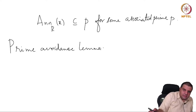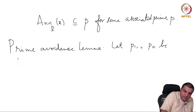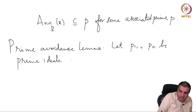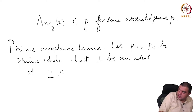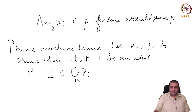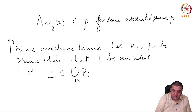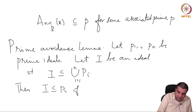Here is a statement about arbitrary rings: let P₁ through Pₙ be prime ideals, let I be an ideal such that I is contained in the union of the Pᵢ. Then I is inside Pᵢ for some i.